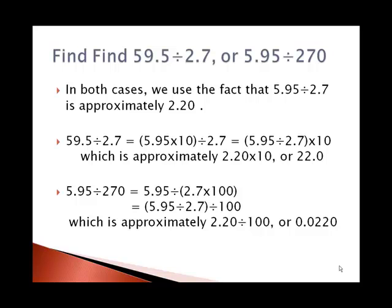If we have other numbers that aren't on the log table like 59.5 or 270, we do the same sort of adjusting. For 59.5 divided by 2.7, we can break the 59.5 into 5.95 times 10 and then say that's divided by 2.7. Use some properties, commutative and associative, to end up getting 2.20 times 10 or 22.